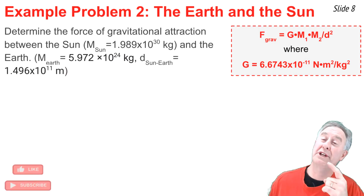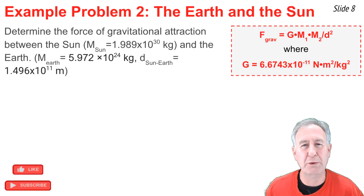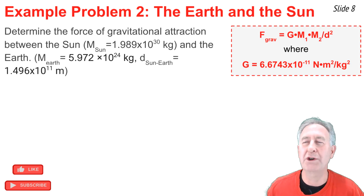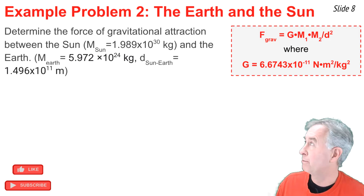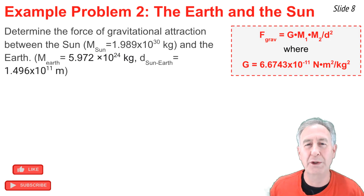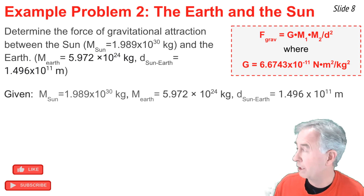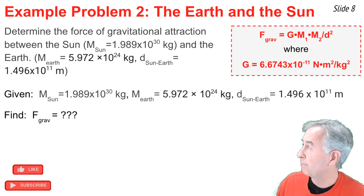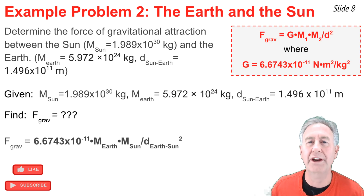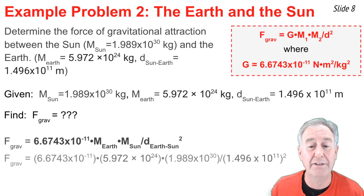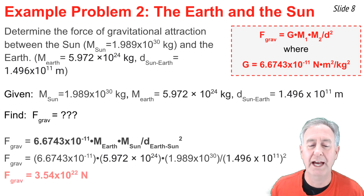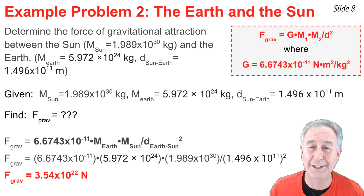Now that we know the proportionality constant, we can use the equation to solve physics word problems. Our first example: determine the force of gravitational attraction between the sun and the Earth. We're given the mass of the sun, the mass of the Earth, and the distance between their centers. We write down what we know and what we're looking for — the F-grav — and carefully substitute known values into the equation. If done correctly, we get 3.54 × 10²² newtons, which is, as expected, a rather large force.